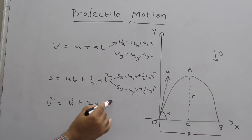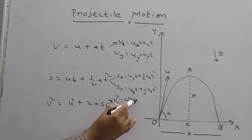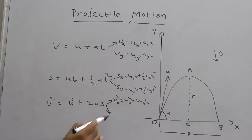Similarly for v², you can write the formula as vx² = ux² + 2axsx. Now vy² = uy² + 2aysy with respect to horizontal and vertical.